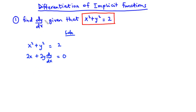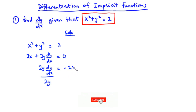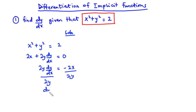Because we are finding dy/dx we are going to transpose 2x to the right hand side, so we have 2y dy/dx equals negative 2x. Then we divide through by 2y, so finally dy/dx is equal to negative x over y. This is how to find the derivative of an implicit function.